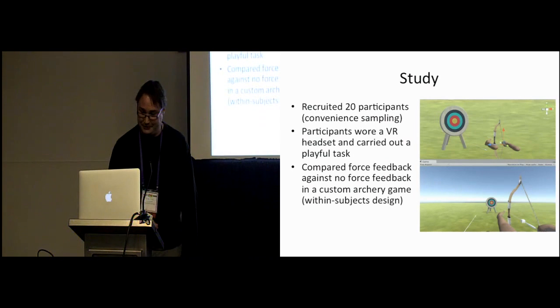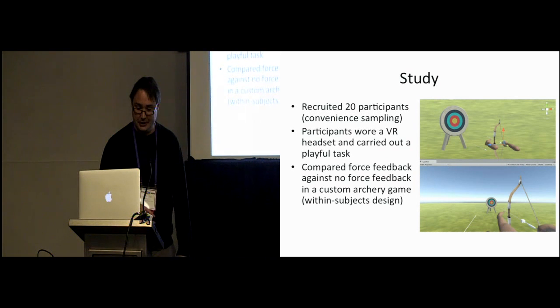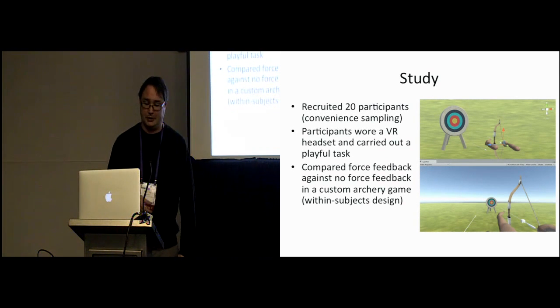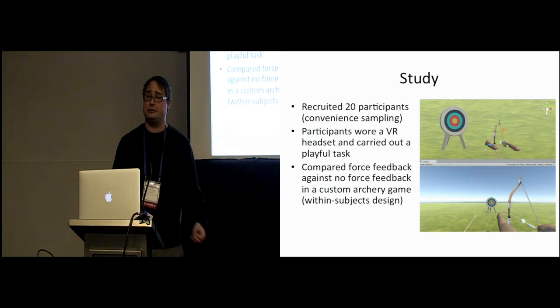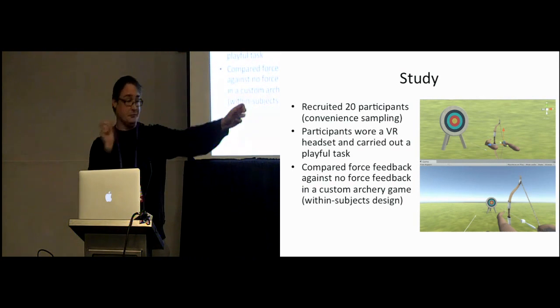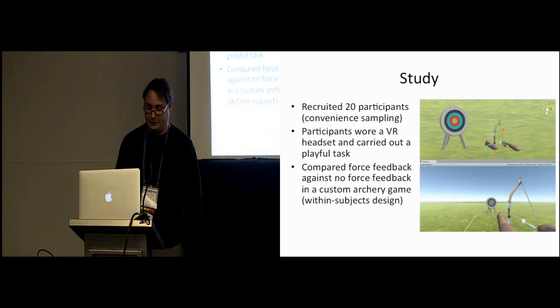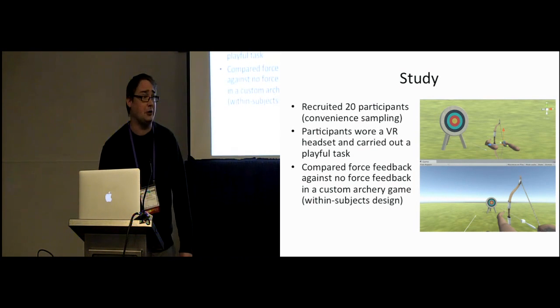But we did do a small study to show you the power of the SDK and the system as it currently is. So we created an archery game from scratch using Unity, and recruited 20 participants via convenience sampling. And we have them basically doing a simple, playful, immersive task. So they pick an arrow, and they put it into the bow, and let go, and basically try to hit targets. And we basically compared using Dexmo versus not using Dexmo. Within subject design. So each participant was exposed to both conditions.